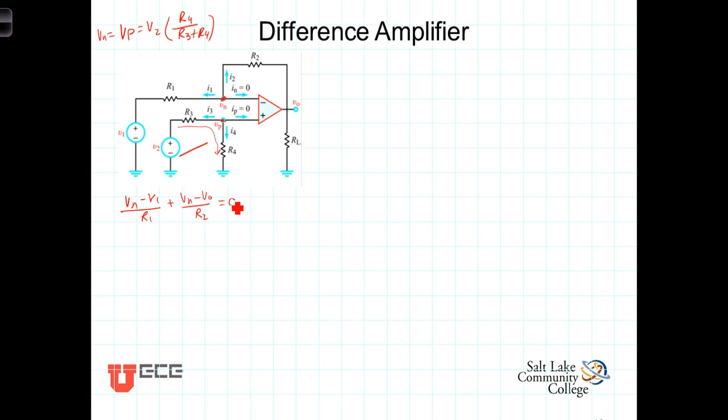Now, combining terms and factoring out the V sub n, we've got V sub n times 1 over R1 plus 1 over R2, and then we have minus V1 over R1. We still have this minus V out over R2. Let's take it to the other side as a positive V out over R2. Now, let's get a common denominator, so we have V sub n times R1 plus R2 over R1 times R2 minus V1 over R1 equals V out over R2.